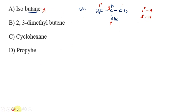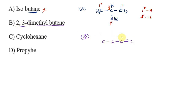Option B is 2,3-dimethylbutane. We have a butane chain — 1, 2, 3, 4 carbons. At position 2 there is one methyl group, and at position 3 there is one methyl group. So we have CH2 in the middle, and CH3 groups attached. This is 2,3-dimethylbutane.